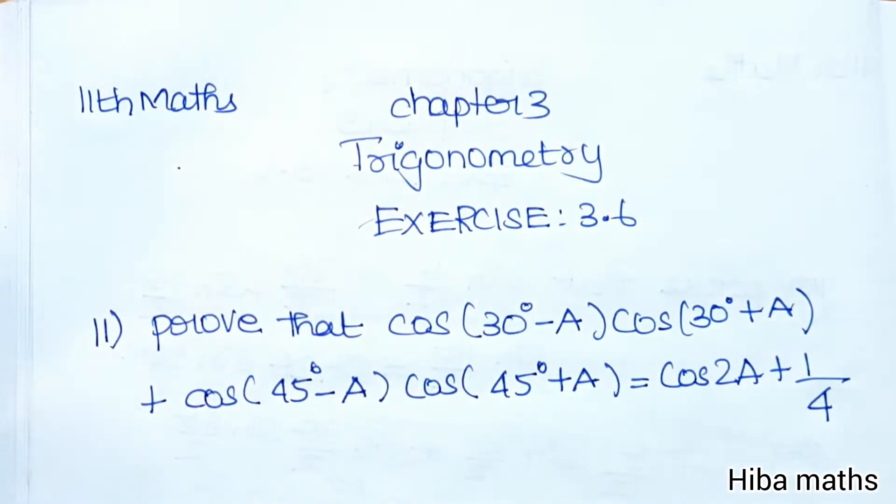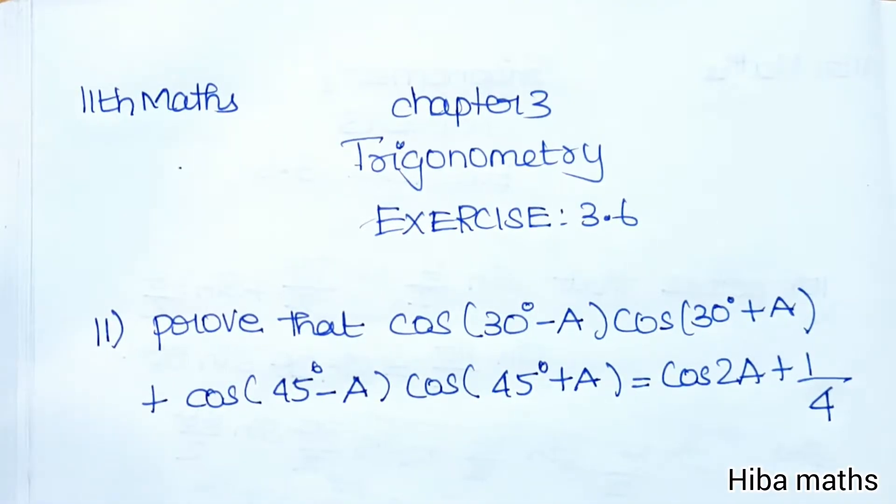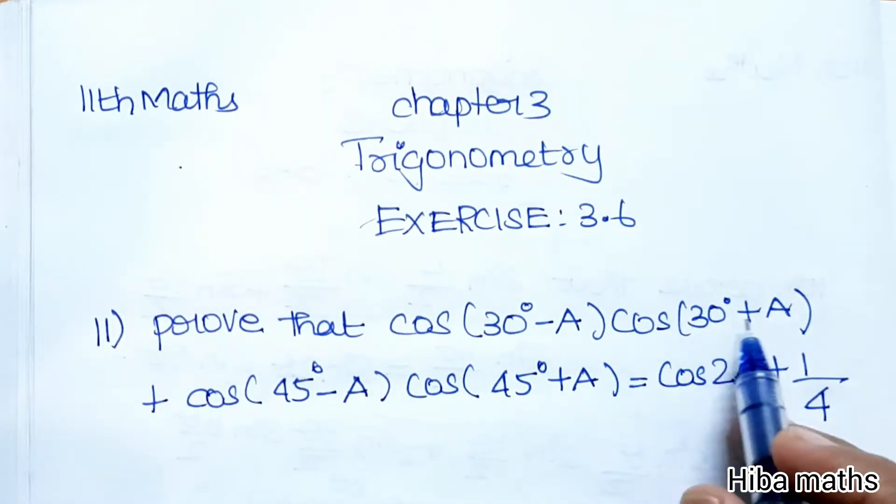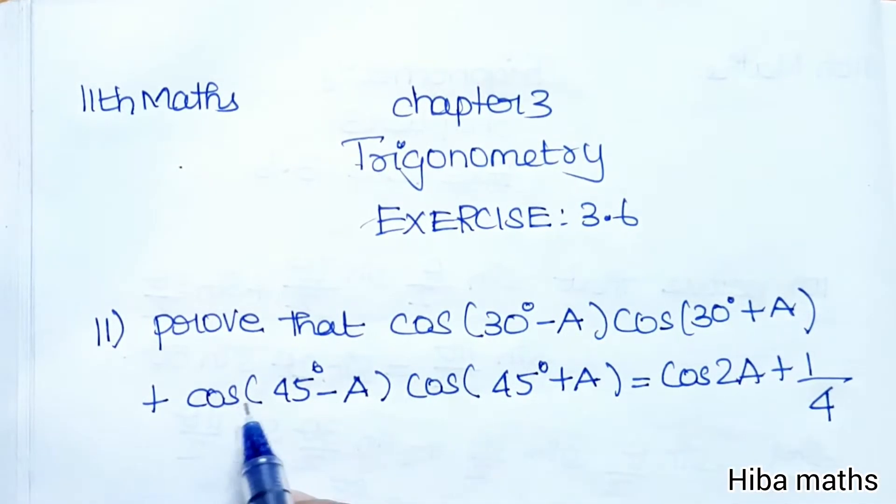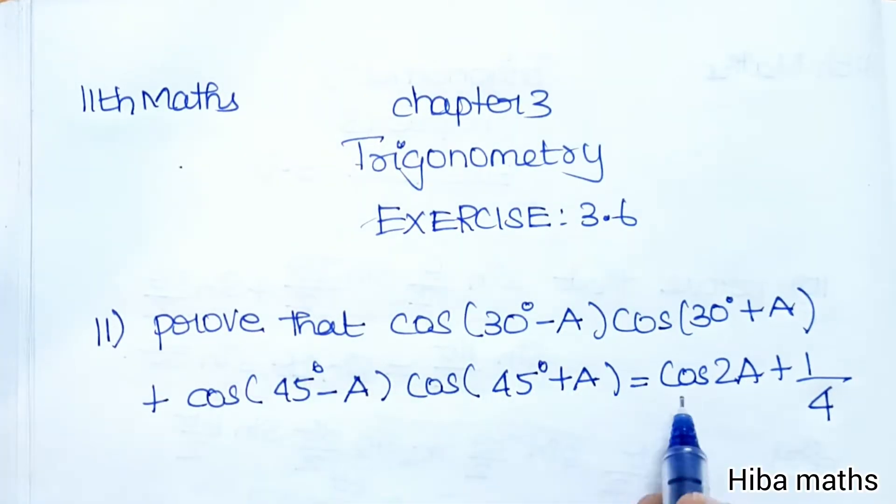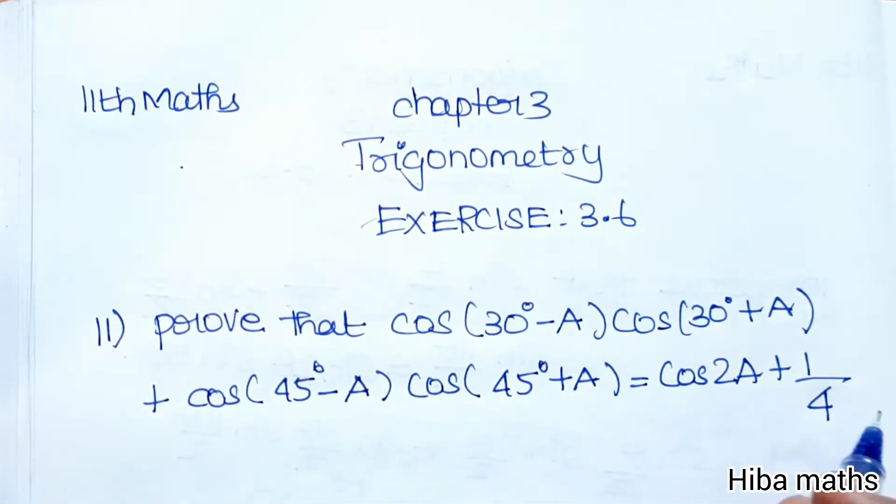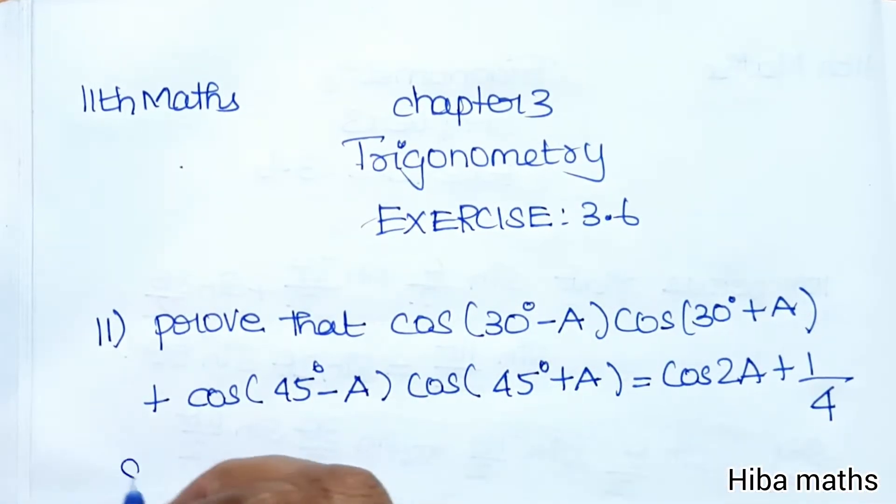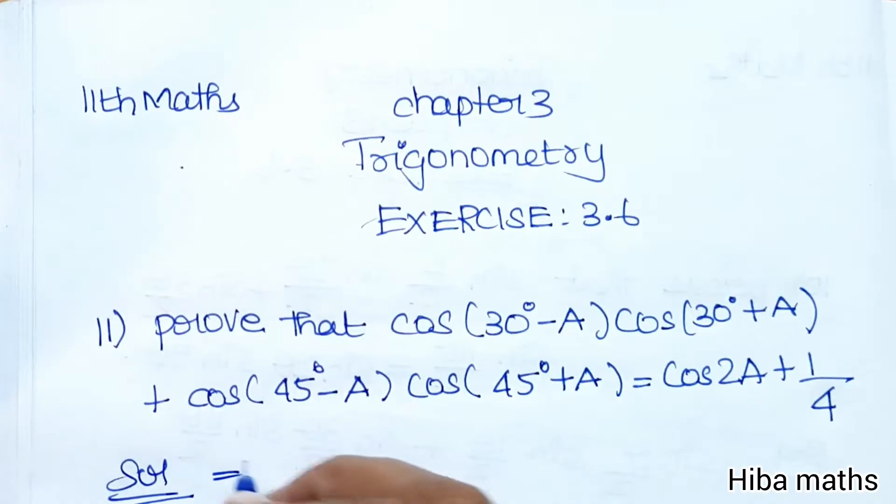Hello students, welcome to Hiba Maths. 11th standard Maths, Chapter 3 Trigonometry, Exercise 3.6, Question 11. Prove that cos(30° - A)cos(30° + A) + cos(45° - A)cos(45° + A) is equal to cos(2A) + 1/4. Let's prove that LHS is equal to RHS.